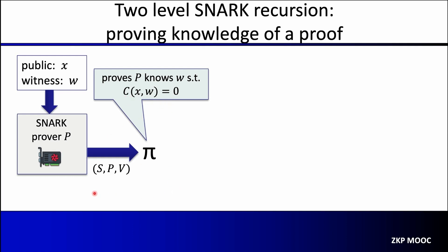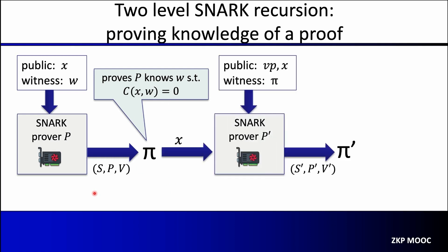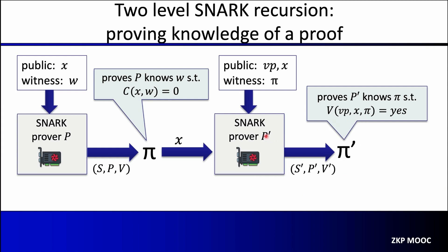But that's not where we stop. Now we run another proof system on top of this proof. The public statement is still X, but the witness for the second proof system is actually the proof pi from the first system. So what this second system is doing is proving knowledge of a proof that W is a valid witness for X. The circuit that the prover P' is working with is actually the verification circuit V of the first system SPV.